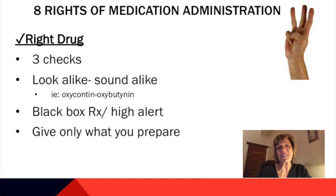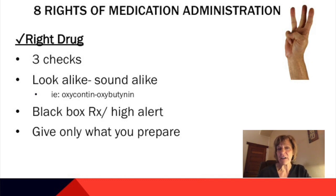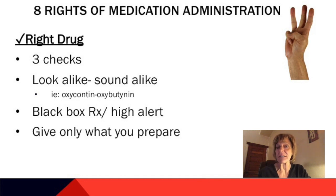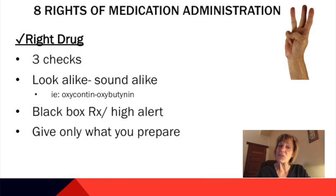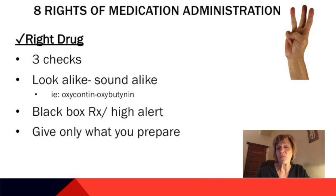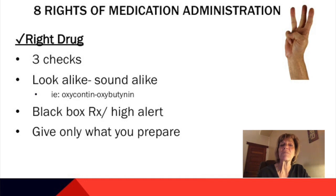Next is the right drug. The first thing to think about is that you do three checks on that drug. In the hospital, as the drawer opens with the electronic medication dispenser, I do my first check of the medication. I close the drawer and do my second check. Then in the room when I bar-scan the medication after I've identified my patient, that's when my third check happens. Get your eyes on that medication three times before you administer it to the patient.